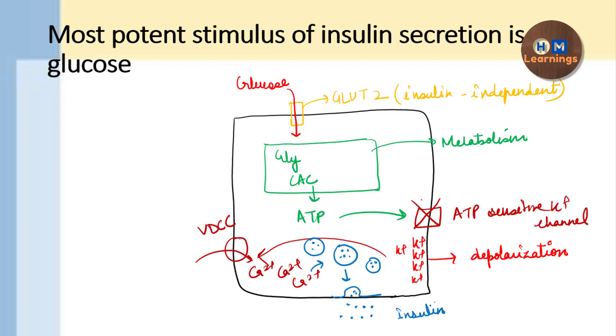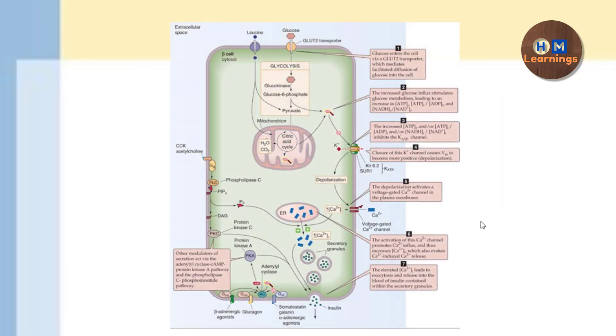So this is the whole mechanism that how it is happening. Now, this slide is basically showing the same thing which I have explained to you. First, the glucose will be into the cell via the GLUT-2 transporter, which is a facilitated diffusion.